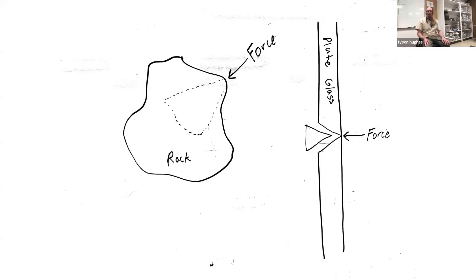It's based on a principle I like to compare to a BB hitting a plate glass window — it's called a Hertzian cone. Where the BB hits, there's not necessarily a big fracture, but on the other side of the glass, a cone-shaped piece gets popped out as that force exerts outwardly, conically. The same thing happens with a piece of rock. That Hertzian cone creates a conchoidal fracture, and it allows you to accurately and predictably break pieces of this rock off and shape it, if you know what you're doing.